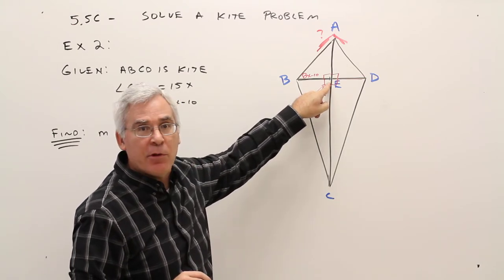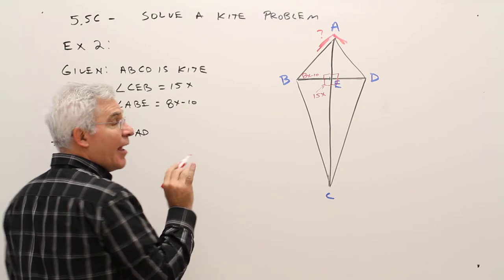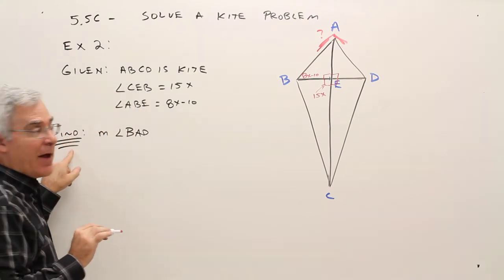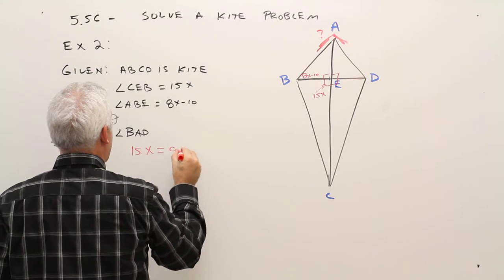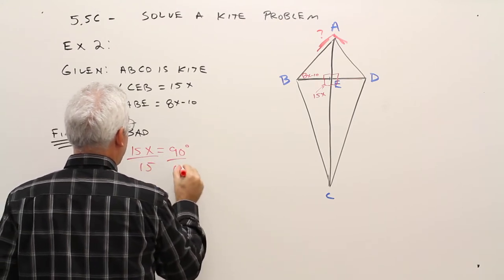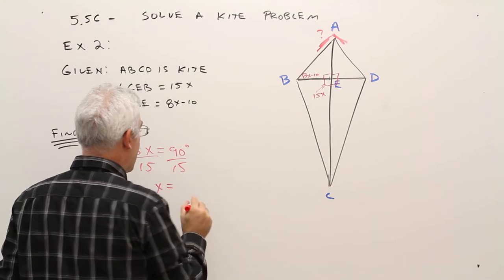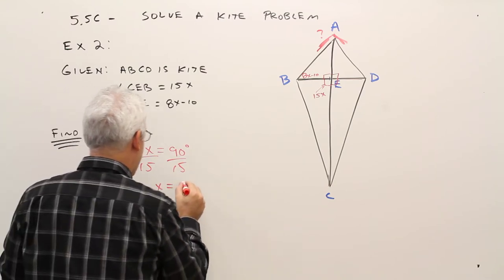Well, 15x would have to equal 90 degrees. Okay, again, and I'm not doing a proof. I'm just doing a find. So 15x equals 90 degrees. So divide by 15, divide by 6. So x would equal 6.